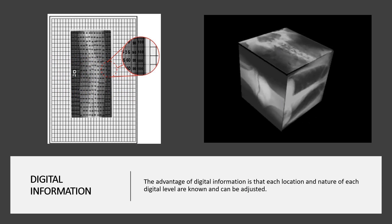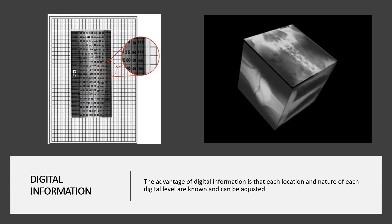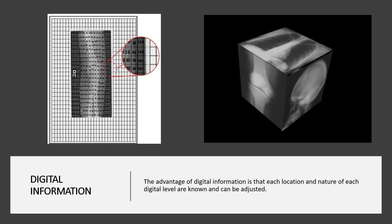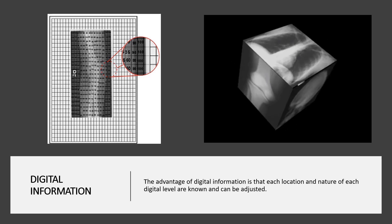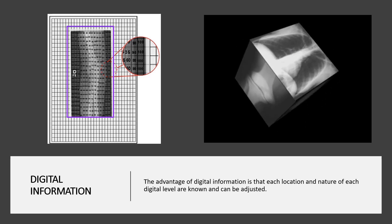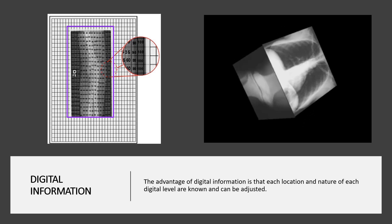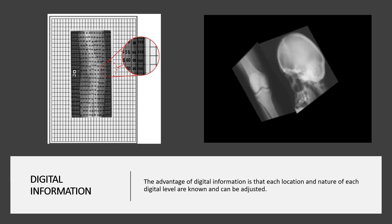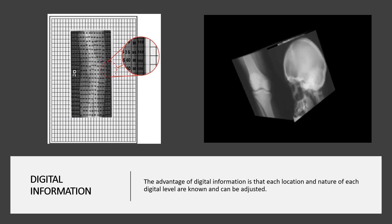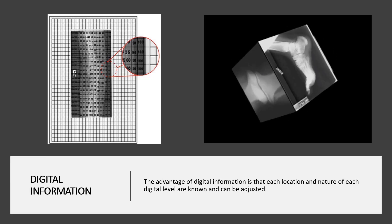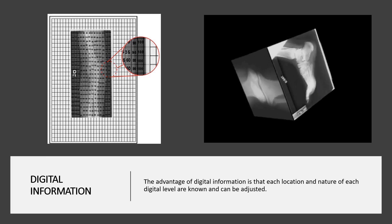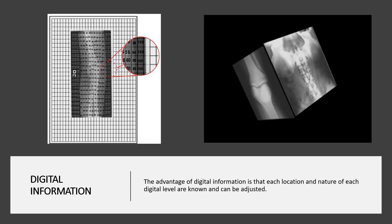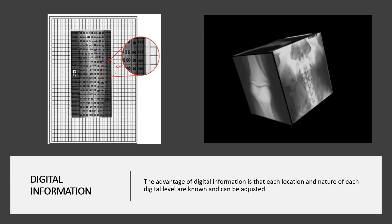The image on this slide demonstrates how we would utilize an active matrix on a flat panel detector, collimating to the area of interest, and how the detectors would actually collect the intensities or the interactions between the tissue and the ionizing radiation so that we may be able to create digital images. The advantage of digital information is that each location and the nature of each digital level are known and can be adjusted.